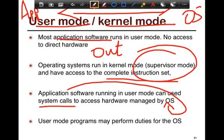An example of a system call would be 'create' — a call that creates a file on your disk. If an application wants to create a file, it can call into the OS to do so. System calls, for the time being, you can think of as function calls, except that these functions reside within the operating system in kernel mode. User mode programs use these system calls to extract a lot of different functionality from the OS.